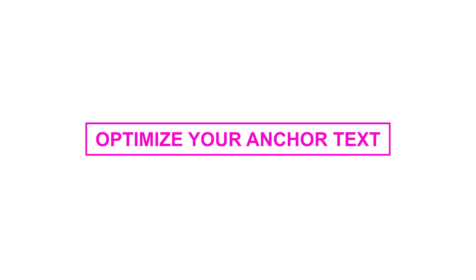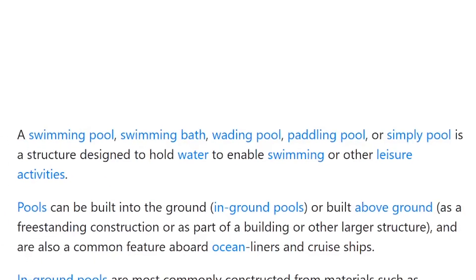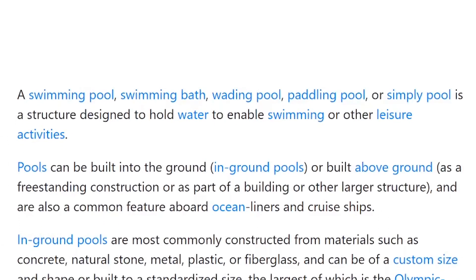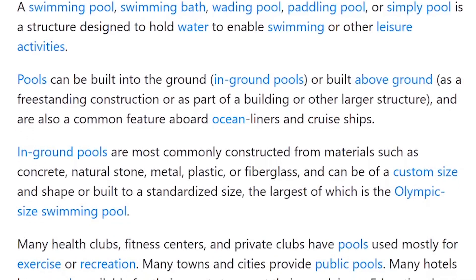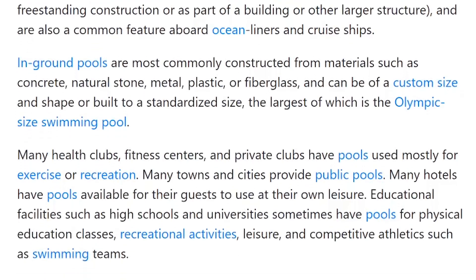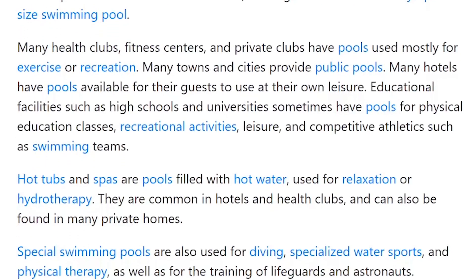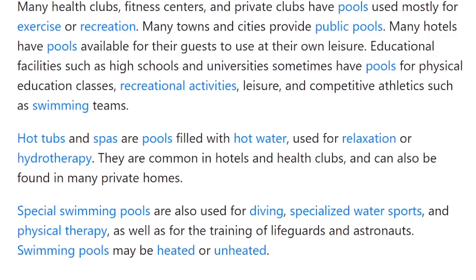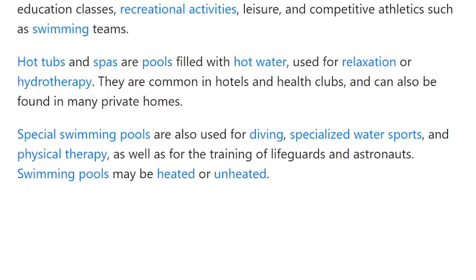Here are three things to keep in mind. Number one: do not keyword stuff. Back in the day, before search engines became advanced, websites were able to keyword stuff their anchor links. Basically, you would go to a website and every single time the major topic of that page was mentioned, it was hyperlinked to a resource. If it were about swimming pools, every instance of that phrase would be anchor text. Unfortunately, that sort of anchor text is overwhelming and not even really contextual.